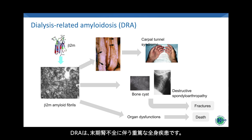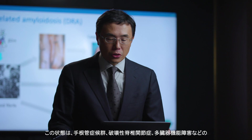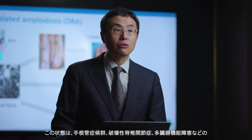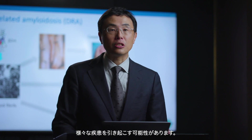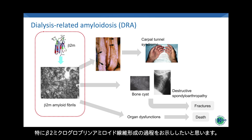Dialysis-related amyloidosis, DRA, is a severe systemic disorder associated with end-stage kidney disease. It involves the accumulation of beta-2-microglobulin (beta-2-m) and molecular interactions leading to amyloid fibril formation. This condition can result in various complications, including carpal tunnel syndrome, destructive spondyloarthropathy, and multi-organ dysfunction. In this presentation, I will emphasize the pathophysiology of DRA, particularly the process of beta-2-m amyloid fibril formation.